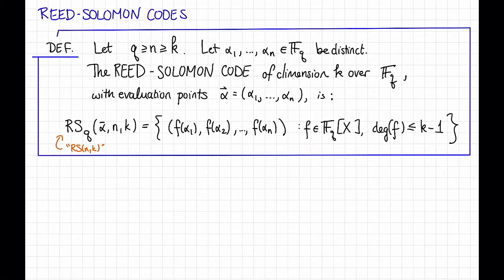More precisely, here's a definition of Reed Solomon codes. Let Q be greater than or equal to N be greater than or equal to K. And let's choose N distinct points α₁ through αₙ in F_Q. Then the Reed Solomon code of dimension K over F_Q with those evaluation points α, α₁ through αₙ, is the following. So I'm going to denote it RS_Q(α,N,K).